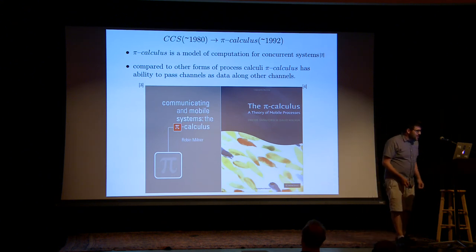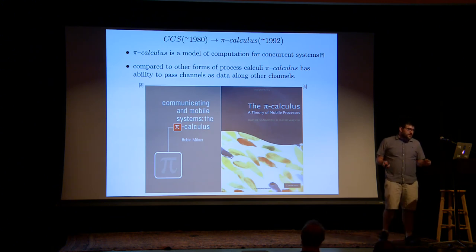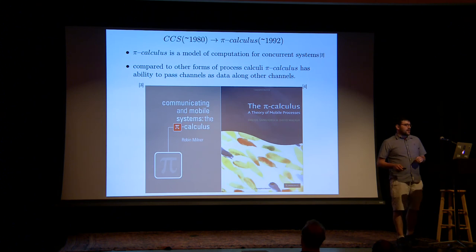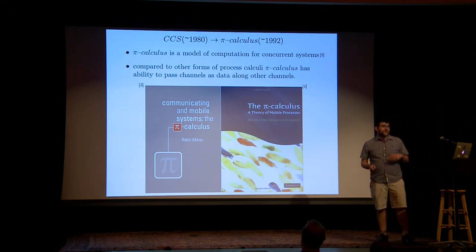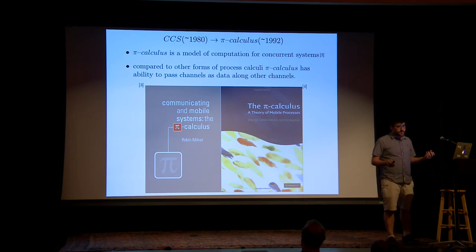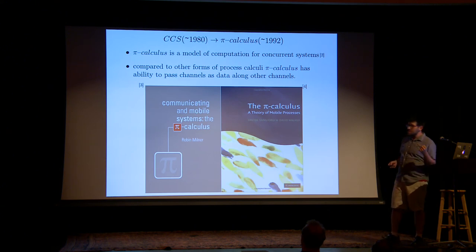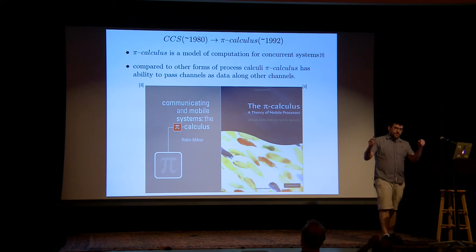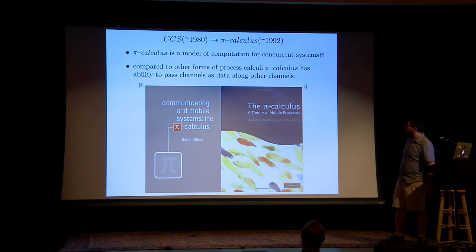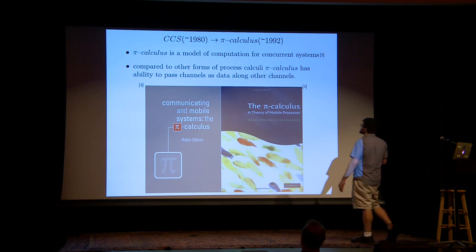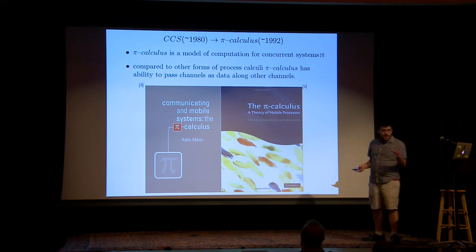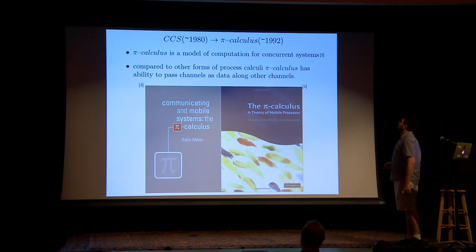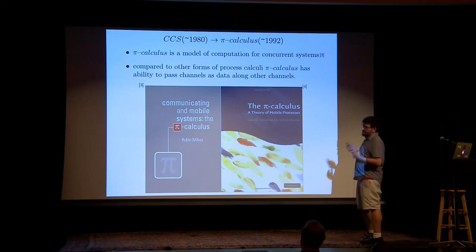Robin Milner came up in the early 90s — actually for many years before that, before he worked on the pi calculus, he had a thing called Calculus of Communicating Systems. You could say Milner was working on CCS. You had Tony Hoare working on CSP, which everyone loves now — we all love it because Go has it or something. The pi calculus came around in the late 80s, early 90s, as a model for computation for concurrent systems.